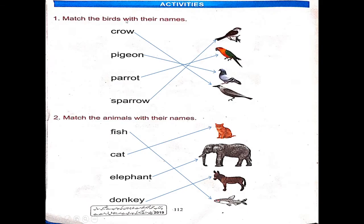Activities. Match the birds with their names. Crow — crow is this little bird here. Its color is black and its name is Crow. Pigeon — pigeon is this bird. Parrot — this is a parrot. Sparrow — sparrow is a small little bird.